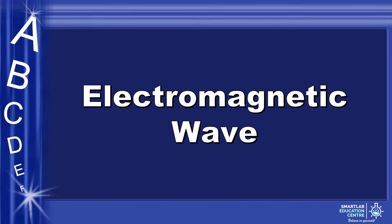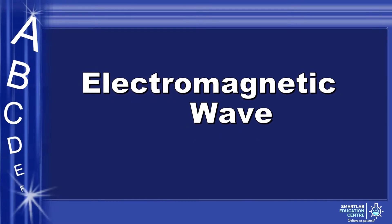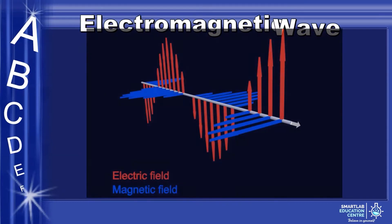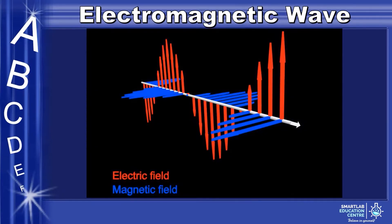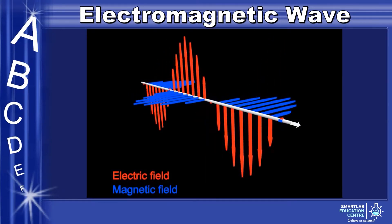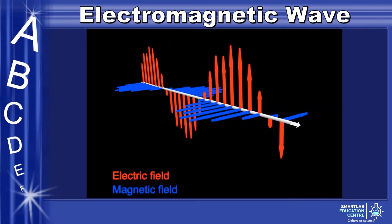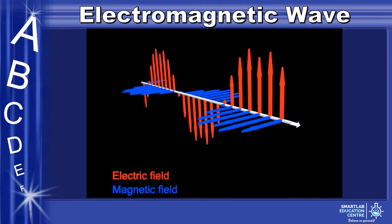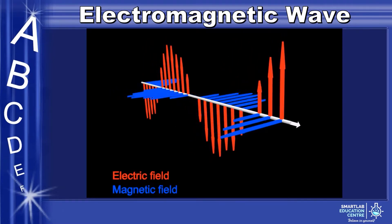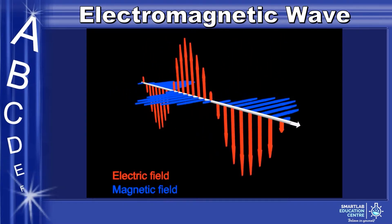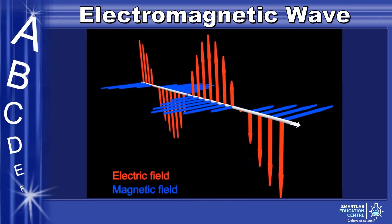First topic: Electromagnetic Wave. This is the diagram of an electromagnetic wave. Red is the electric field, blue is the magnetic field, and the white line is the direction of travel.